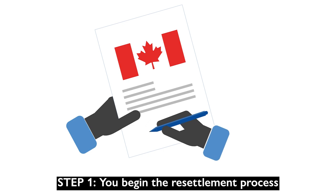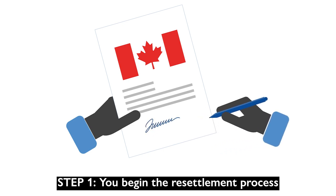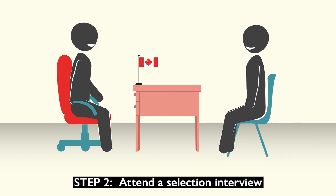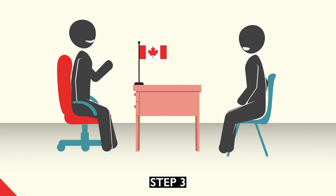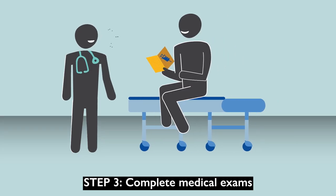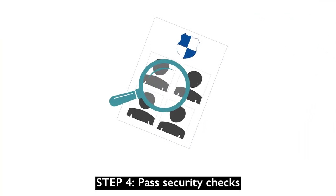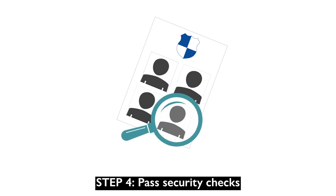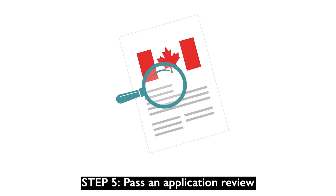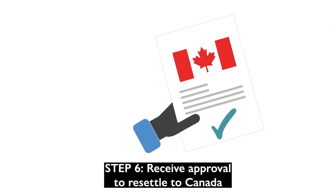Step 1: You begin the resettlement process. Step 2: Attend the selection interview. Step 3: Complete medical exams. Step 4: Pass security checks. Step 5: Pass an application review. Step 6: Receive approval to resettle to Canada.